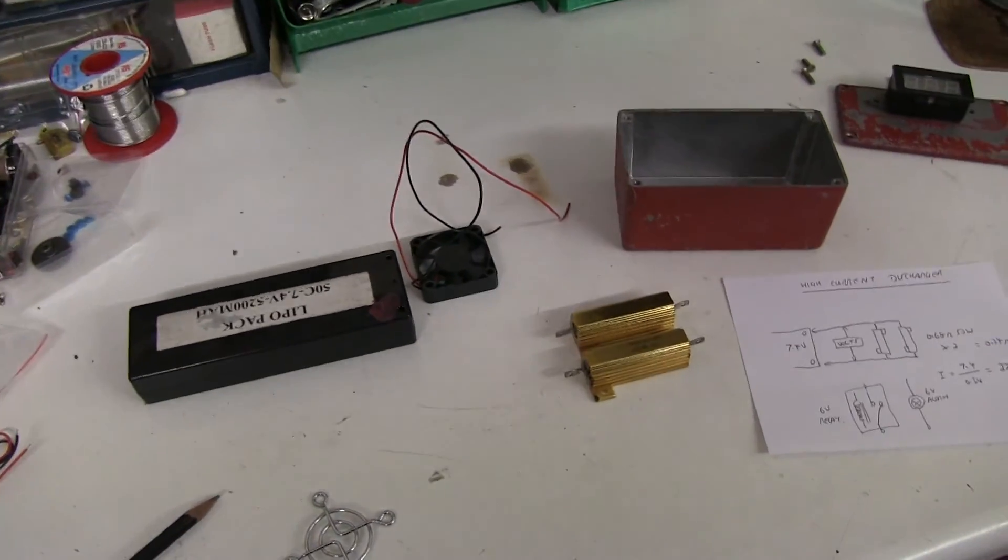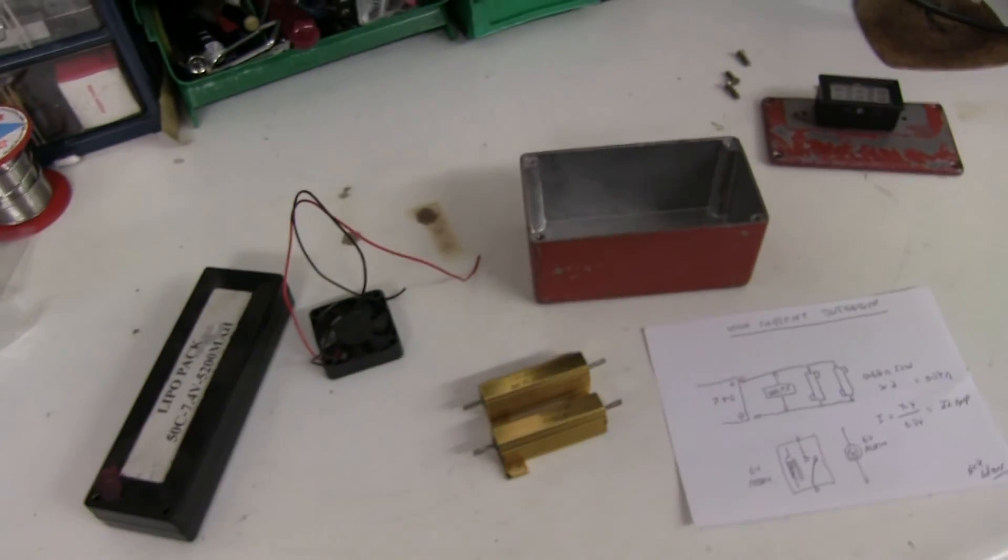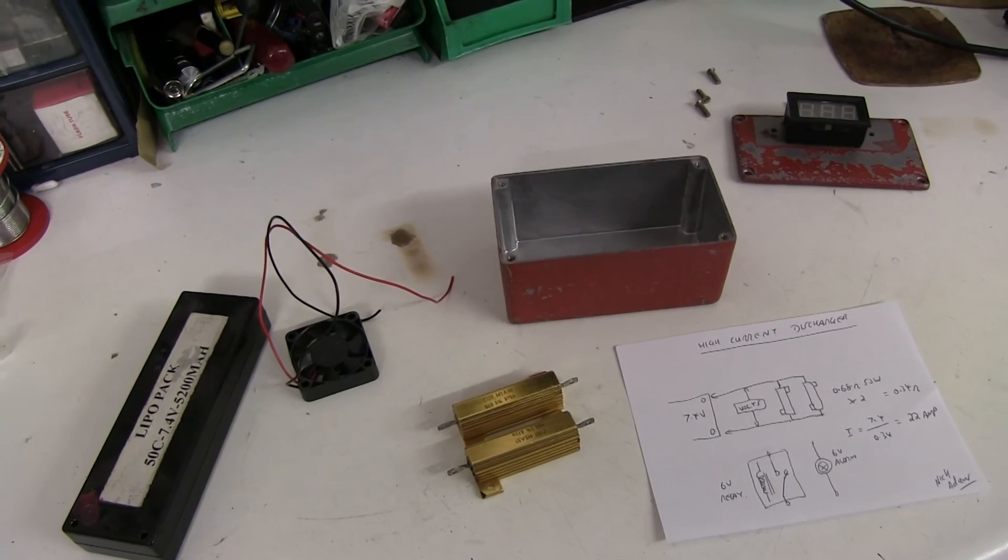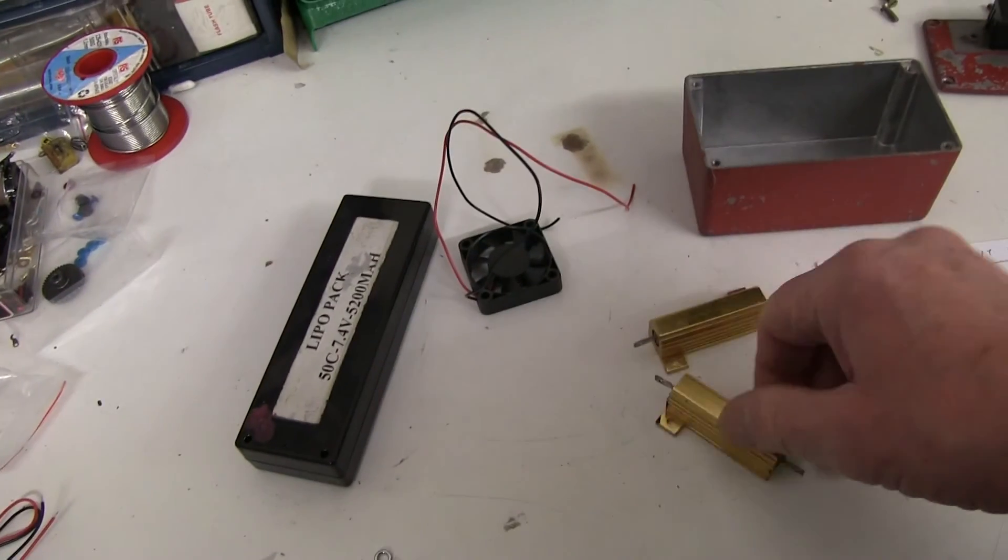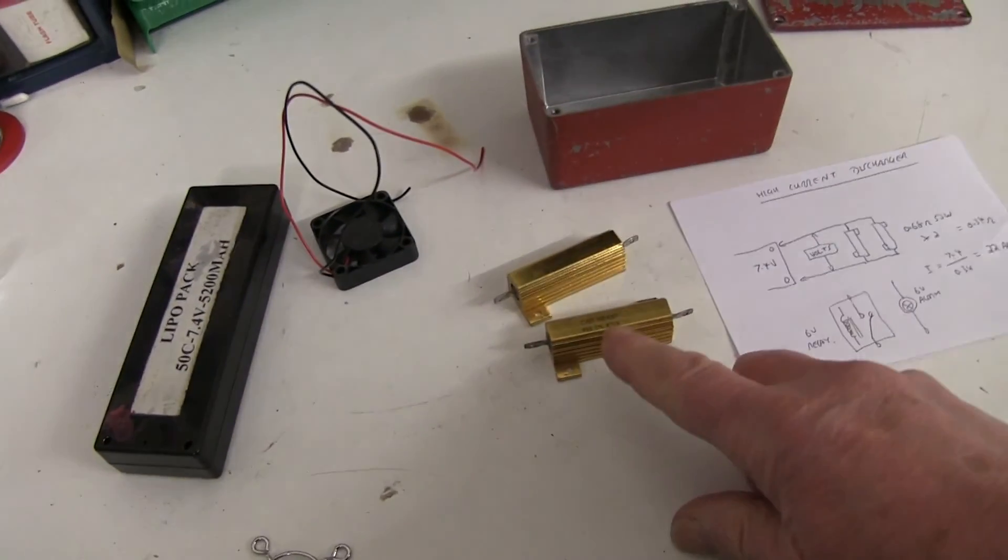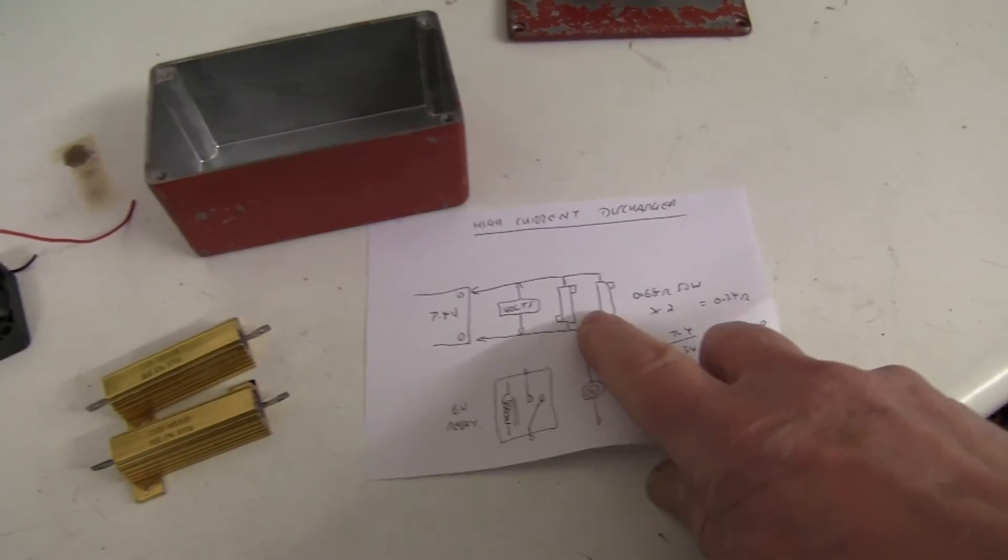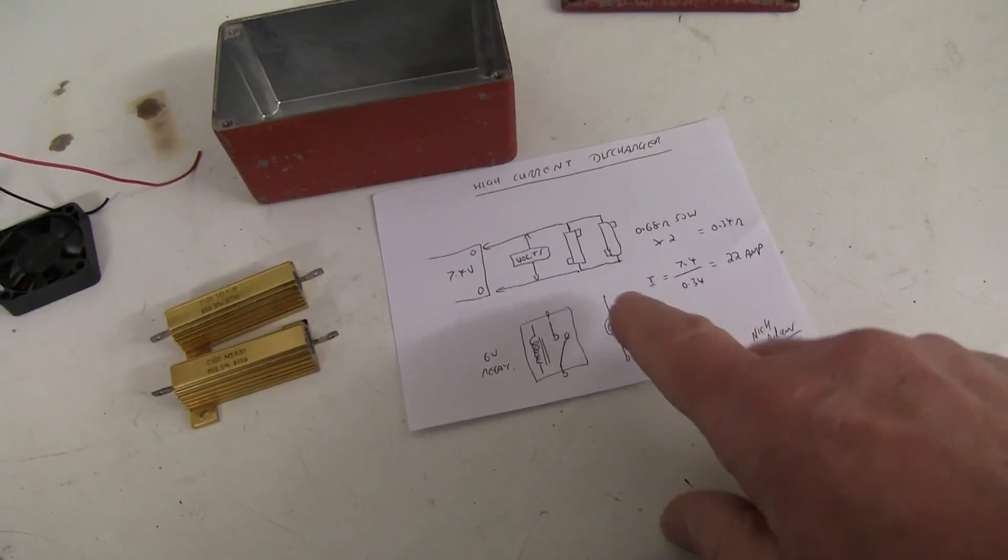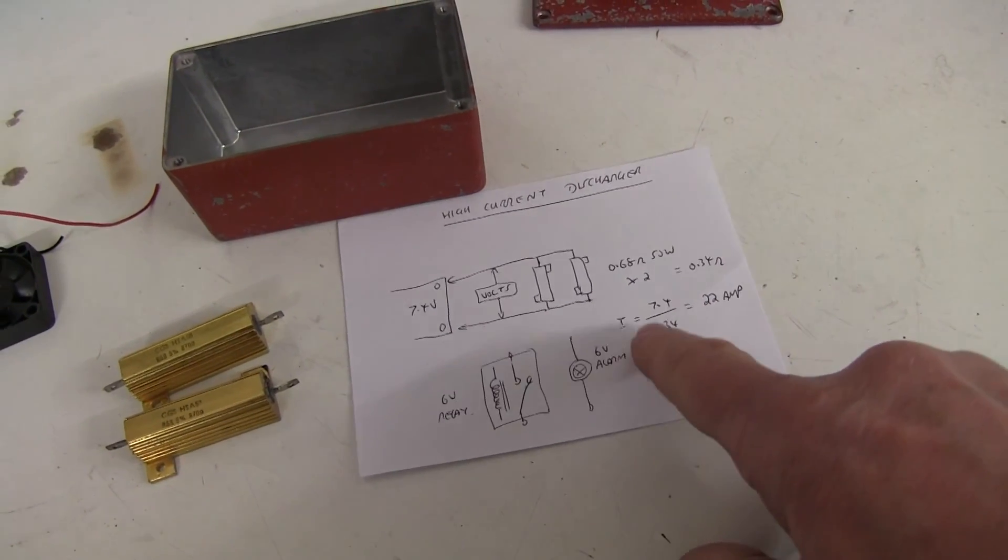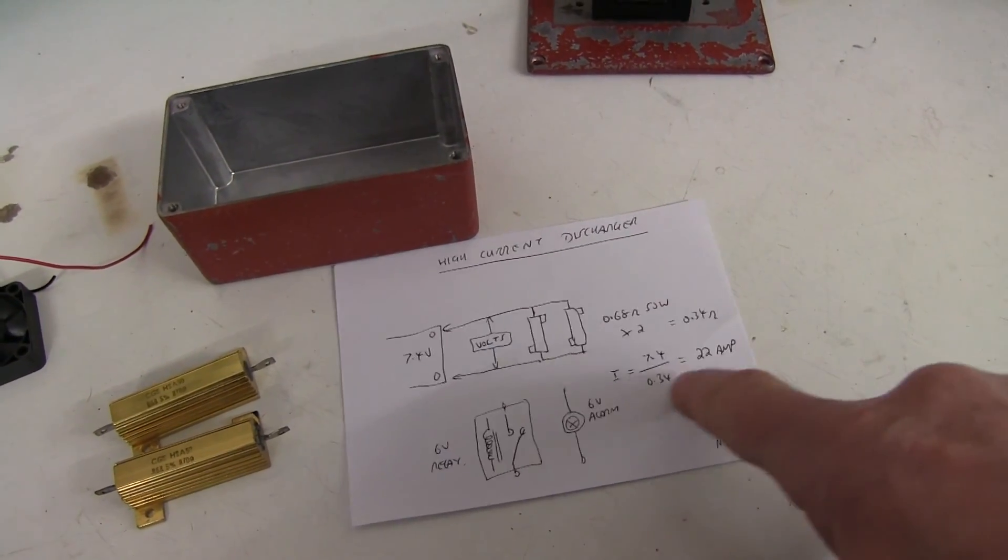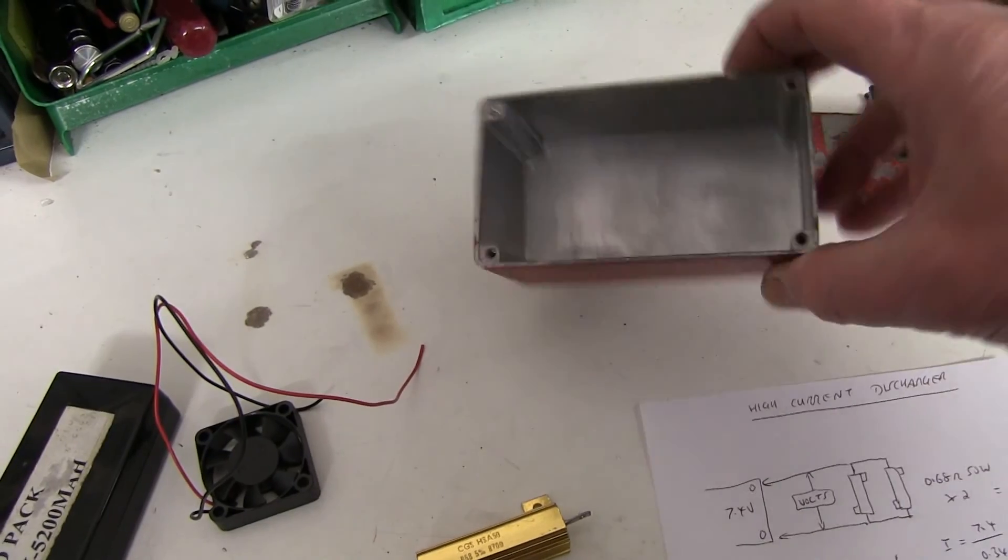A high current discharger for 2S LiPo batteries, talking about up to 40 amps. To make it quickly, I can make a 20 amp one with these 0.68 ohm resistors. Put two in parallel like this gives you 0.34 ohms. Running a 2S LiPo which is nominal 7.4 volts, using Ohm's law: 7.4 divided by 0.34 equals 22 amps. That would generate quite enough heat, but I had this old aluminum box which I can screw them in.